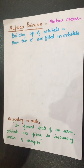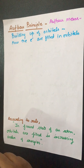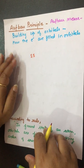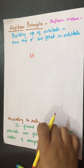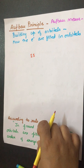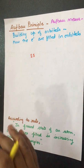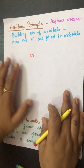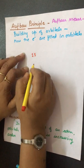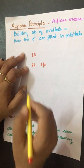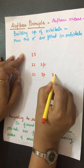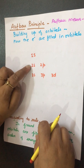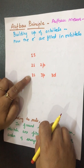The first shell has only one sub-shell, indicated by 1s. The second shell has two sub-shells: 2s and 2p. The third shell has 3s, 3p, and 3d. So the first shell has only one sub-shell (s), the second shell has two sub-shells (s and p), and the third shell has three sub-shells (s, p, and d).